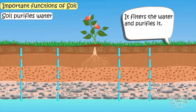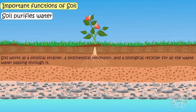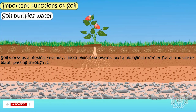Soil also purifies water. When rainwater passes through different layers of soil, it filters and purifies the water. Soil works as a physical strainer, a biochemical renovator, and a biological recycler for all waste water passing through it.